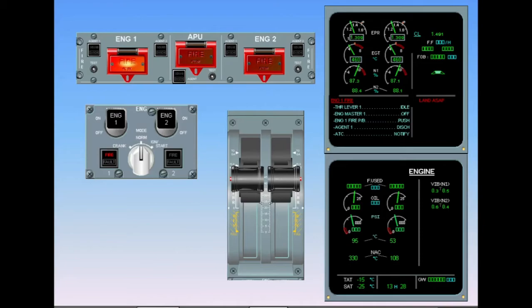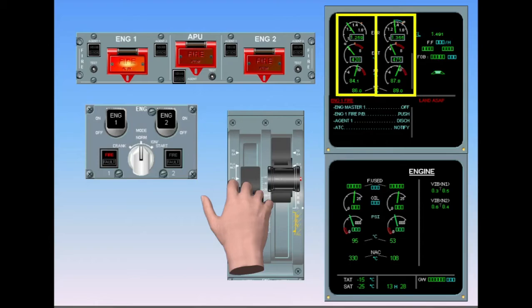After confirmation from the pilot flying, the pilot not flying sets the thrust lever to idle. Engine 1 is spooling down. Engine 2 is accelerating to compensate for the thrust loss.